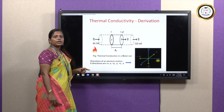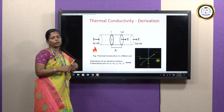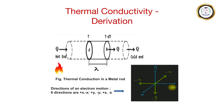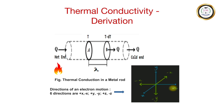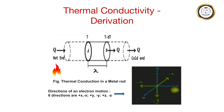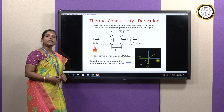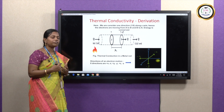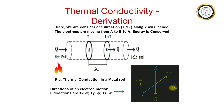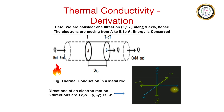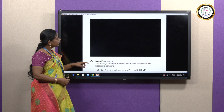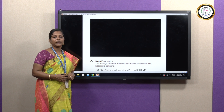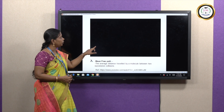Mean free path is the average distance travelled by the electron between two successive collisions. The electron is moving along the X axis, Y axis, and Z axis, as well as the negative directions minus X, minus Y, and minus Z. So totally the electron can be distributed around the rod in six different directions.